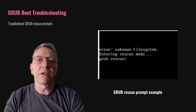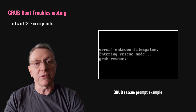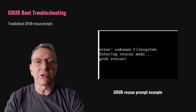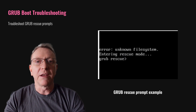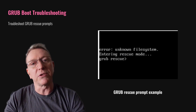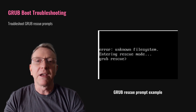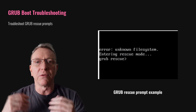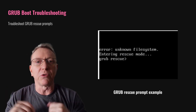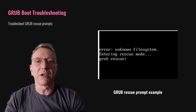GRUB issues often appear as rescue prompts or configuration errors, like GRUB rescue or GRUB prompts. Troubleshooting involves identifying the correct boot partition and manually booting the system. This requires using commands to list devices, set the correct prefix and root, and load the normal module to restore the GRUB menu.